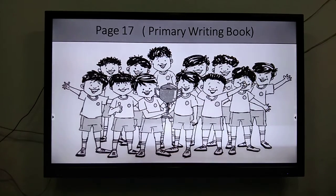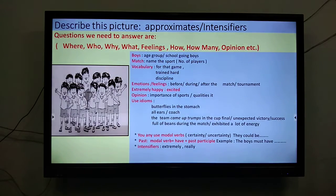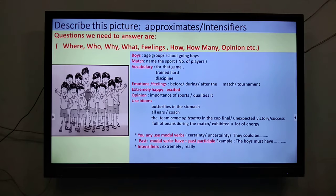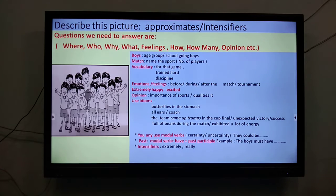We have done similes. Now, page number 17 in your primary writing book, you have a picture. We had completed a paragraph on this picture, but now we are going to use this picture to write a descriptive paragraph. We describe this picture using approximates and intensifiers. When we describe a picture, we need to answer some questions: where, who, why, what, the feelings the picture displays or reveals, how, how many, and your opinion. We have done this activity in junior classes, but now we are going to scale it up.